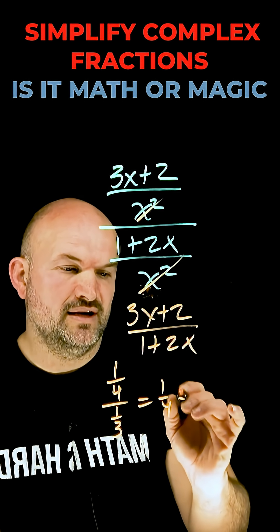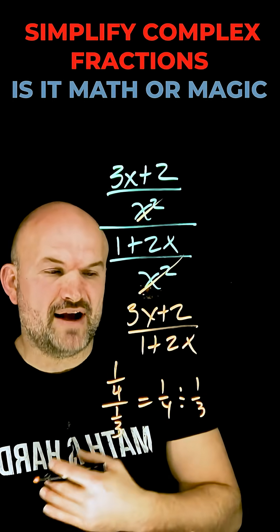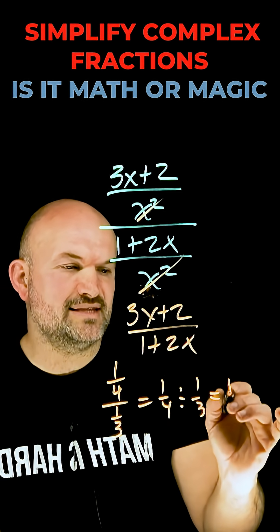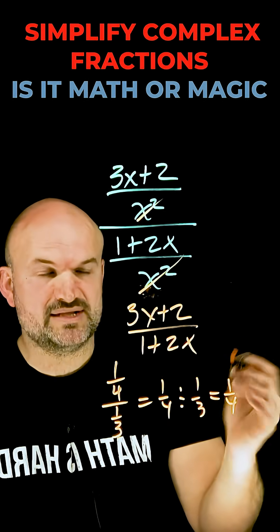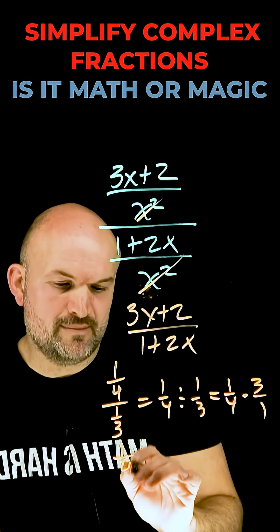We could rewrite this as one-fourth divided by one-third and then recognize, when you're dividing fractions, you can simply just rewrite that as the multiplication of the reciprocal of your divisor. So that'd be 3 over 1. I like that approach and it's easy for students to remember it.